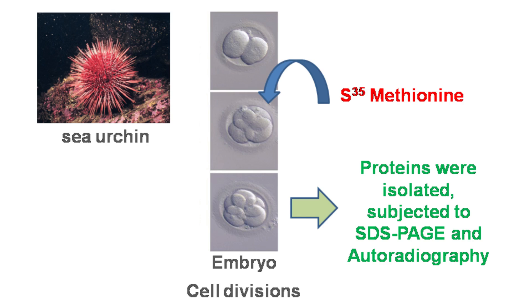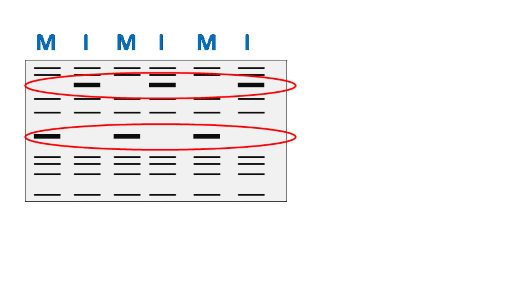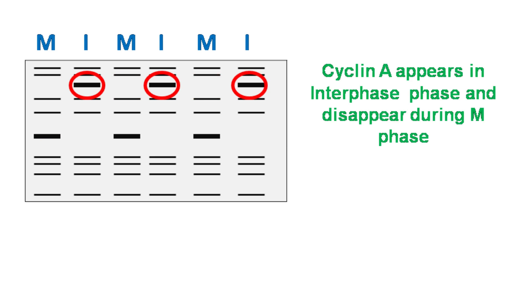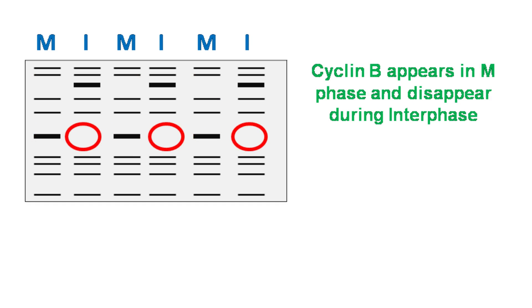The results that he found were surprising. He found proteins that appeared at one stage of the cell cycle and disappeared in the other. And because of the oscillating pattern, he called them cyclins. Cyclin A peaks during interphase and disappears during M phase or mitosis phase, whereas Cyclin B peaks during M phase and disappears during interphase.